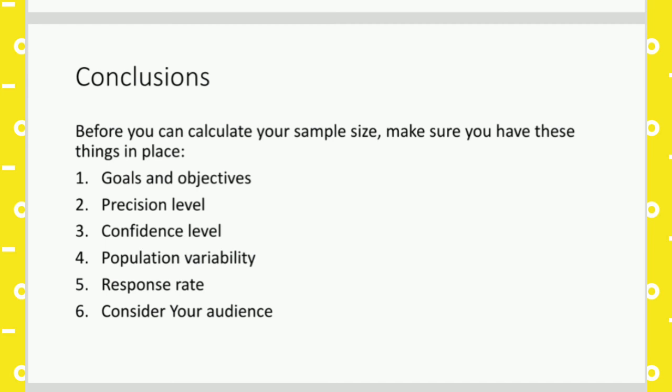Number four: population variability. The variability in the population should also be kept in mind before exactly calculating the sample size. Number five: response rate. The number of households will also depend upon the response rate. Suppose if we go to a very backward area where people are not at all aware about any kind of things in the outside world, then it is very hard to find a proper response rate. In that situation, even if we have a very high number of samples, it is hard to find the exact information.